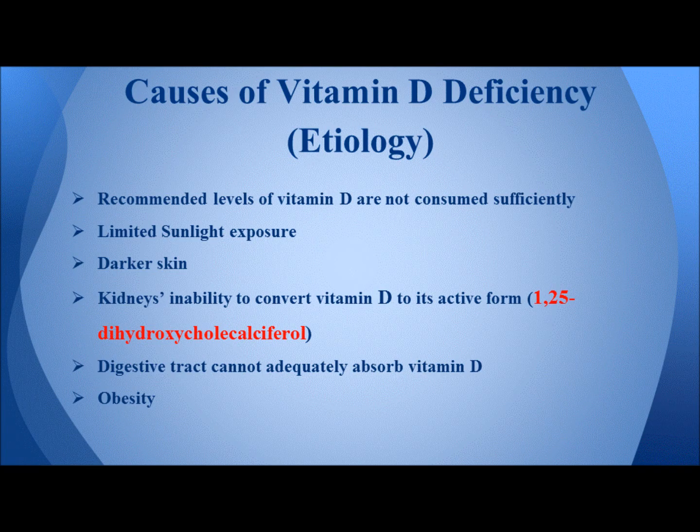The kidneys' inability to convert vitamin D to its active form, 1,25-dihydroxycholecalciferol, is another cause. As people age, their kidneys get weaker. Additionally, if the digestive tract cannot adequately absorb vitamin D, certain medical problems including Crohn's disease, cystic fibrosis, and celiac disease can affect your intestines' ability to absorb vitamin D from the food you eat.